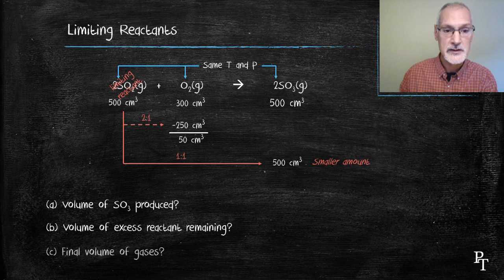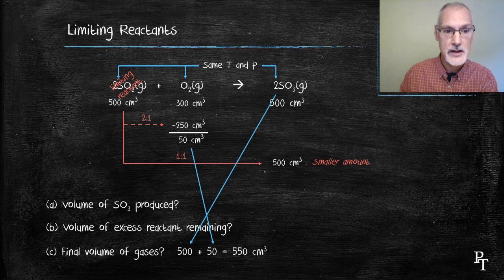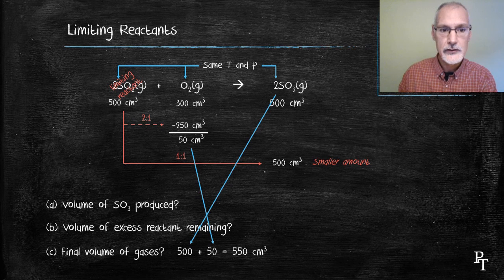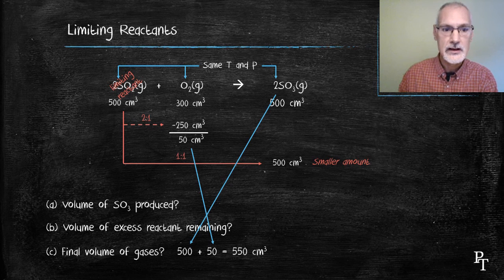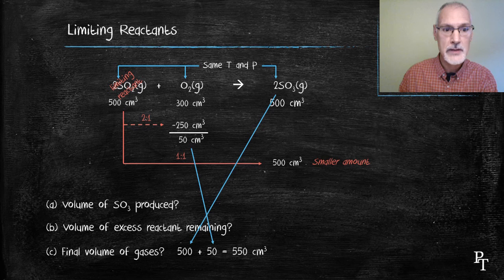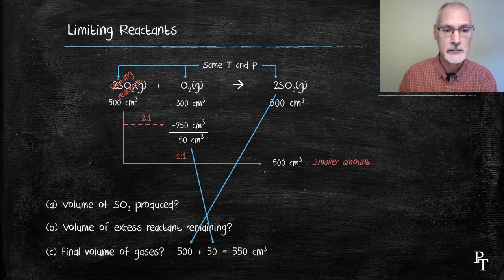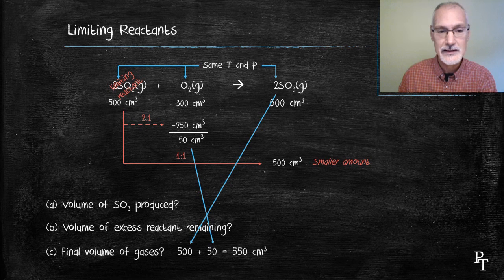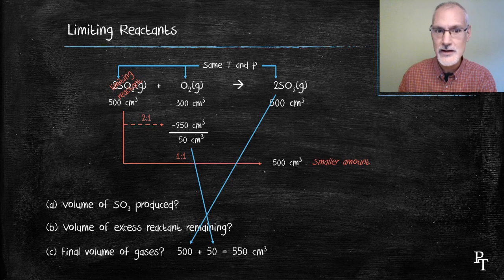My final volume of gas then would be the two of them put together. The excess plus how much I produced or 550 cubic centimeters. So you can see that using gases or volumes of gases we can bypass the need to use mass and molar masses in these equations and you can get quite an elegant and fast solution. Thanks for watching. Comments and questions are always welcome.